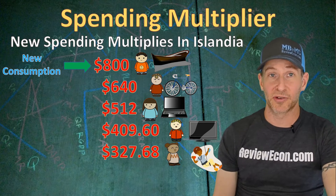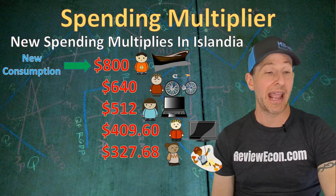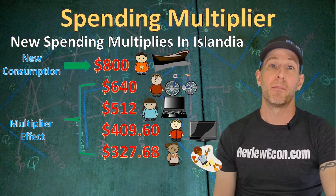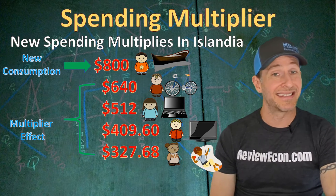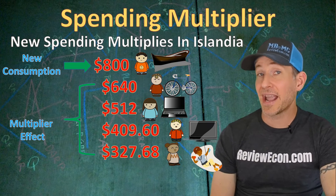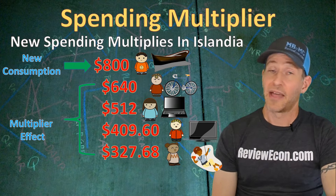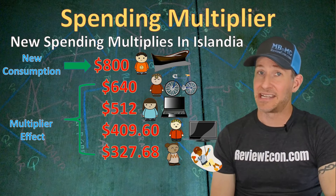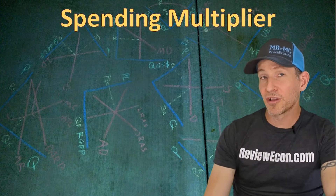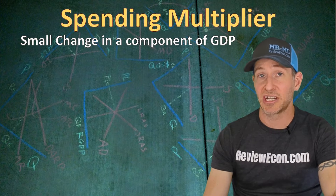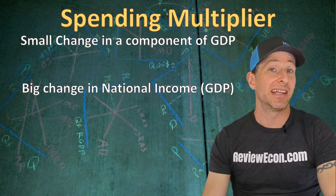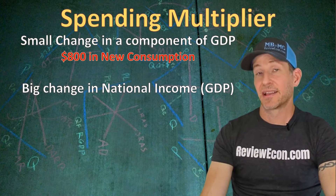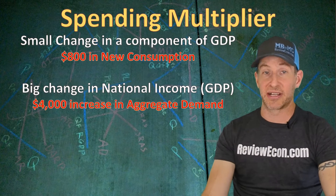With Victor's original increase in consumption of $800, we see a multiplying effect on the overall economy. That original $800 in spending has become much more spending. The $327.68 will continue to be spent at 80% and saved at 20%, and that will keep going until the original $1,000 Victor earned is entirely saved by different people in the Islandia economy. A small change in a component of GDP causes a much larger change in national income. That original $800 increase in consumption by Victor becomes a $4,000 increase in real GDP.